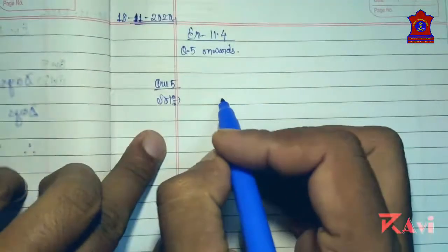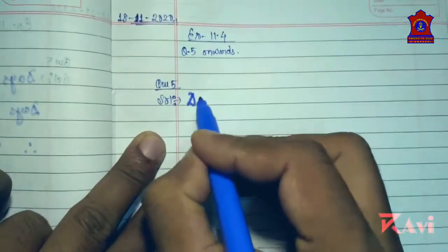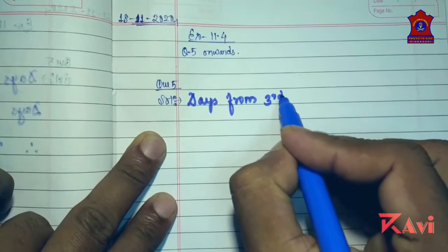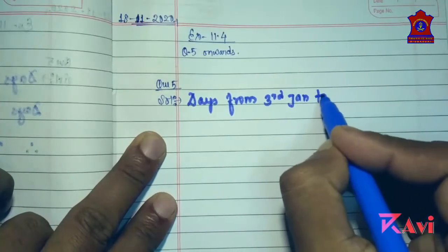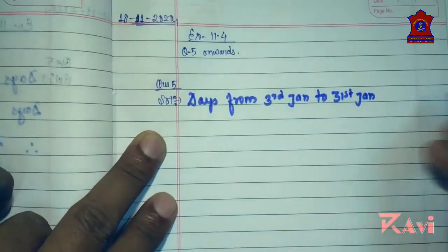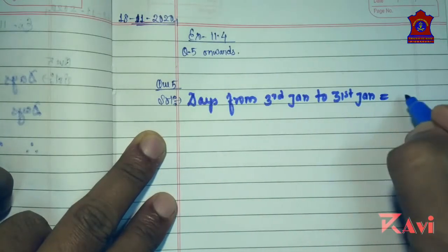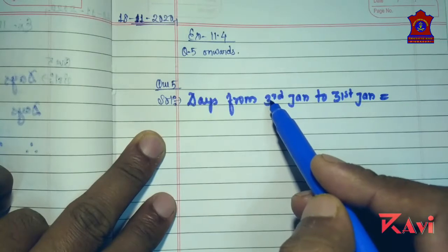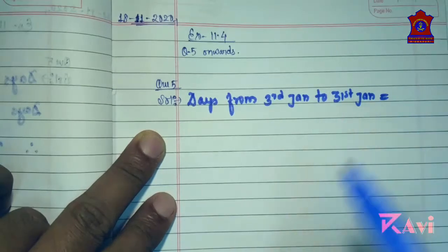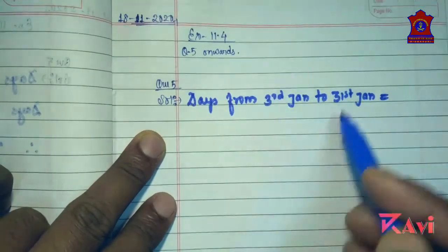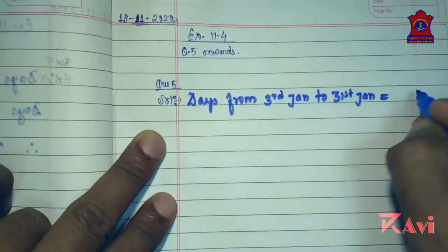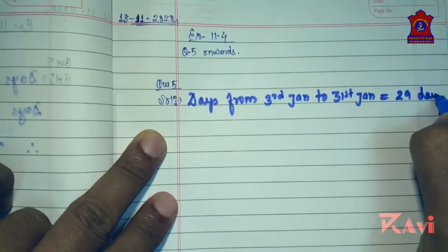Let's write the statement. Days from 3rd January to 31st January. First we'll find out the number of days she spent in January. The tour was started on 3rd January, so we will be counting from 3rd January to 31st January — the number of days in between these two dates. So 31 minus 2 is 29 days.